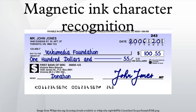Besides decimal digits, E13B also contains the following symbols: transit, amount, on-us, and a dash symbol. Major European countries, including France and Italy, use the CMC7 font, developed by Groupe Bull in 1957.